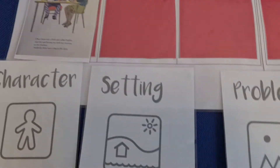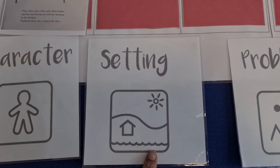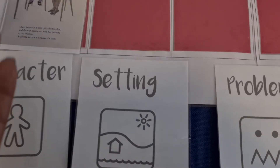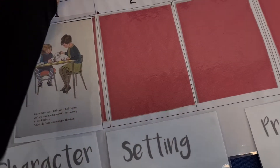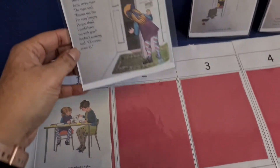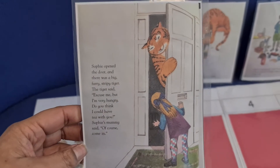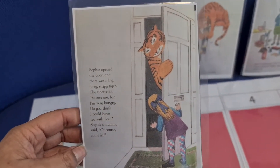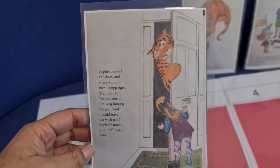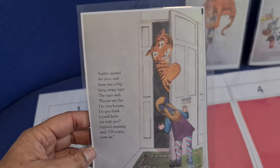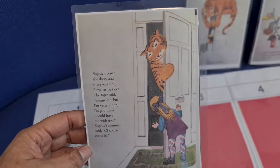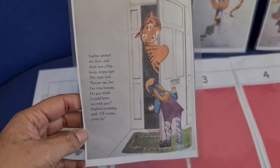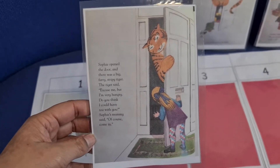Let's have a look at our setting. Where is our story based? Our story is based in Sophie's house. There is Sophie at her front door of her house. Our story is inside the house.